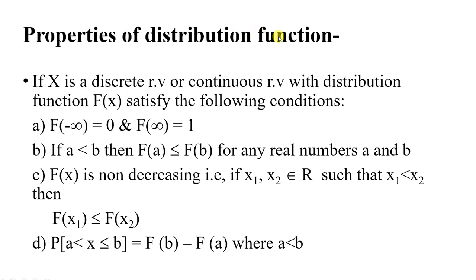There are different properties of the distribution function. If x is a discrete or continuous random variable with distribution function F(x), the following conditions hold. First, F(−∞) = 0 and F(+∞) = 1 — meaning the distribution function at minus infinity is 0 and at plus infinity is 1. Second, if a < b where a and b are any two real numbers, then F(a) ≤ F(b). Third, F(x) is a non-decreasing function.